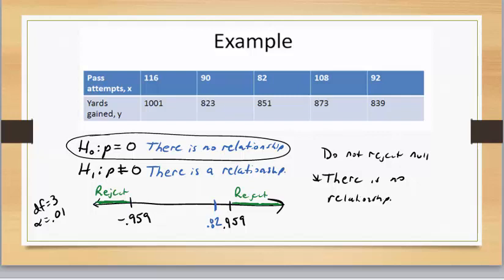If there is no relationship, we do not proceed with any additional test or calculations for this data set. So when we get to the next section and we're doing a regression analysis, if our conclusion is that there is no relationship, we do not do a regression analysis.